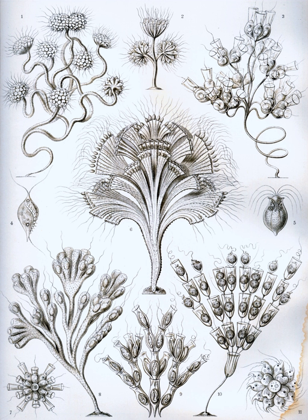Amoebozoa: myxogastrids. Opisthokonta: most metazoans, male gametes. Epithelia and choanocytes, chytrid fungi, zoospores and gametes. Excavata: some acrasids, Pocheina, as zoospores.